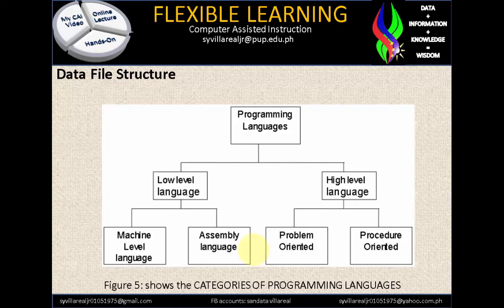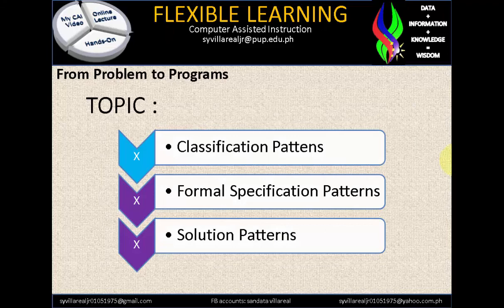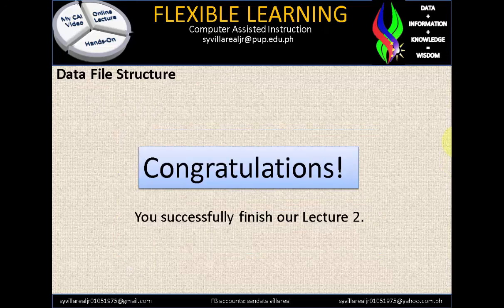Figure 5 shows the categories of programming languages. Under programming languages, we have two: low level and high level. You have to choose what kind of programming language you are going to use. I recommend my students use C++, C#, and Java, and also Visual Basic in Windows. In low level language, we have machine level language and assembly language. In high level language, we have problem-oriented and procedure-oriented. We are now finished with the classification patterns, and we have two more topics to go in this series. Congratulations — you successfully finished lecture number 2. Thank you for watching and good luck.